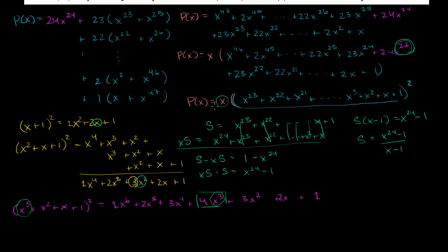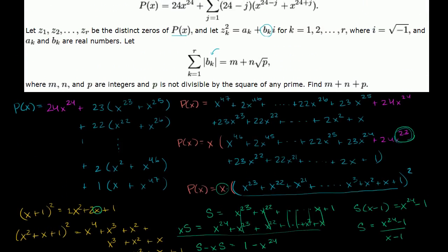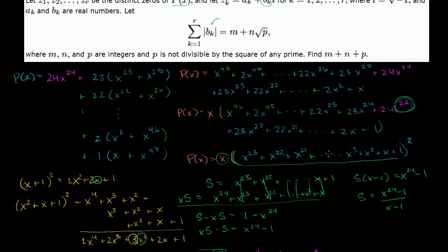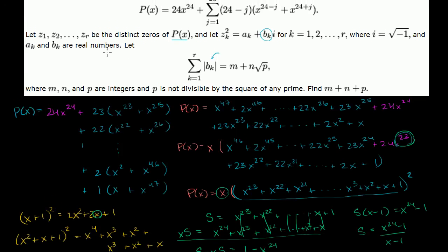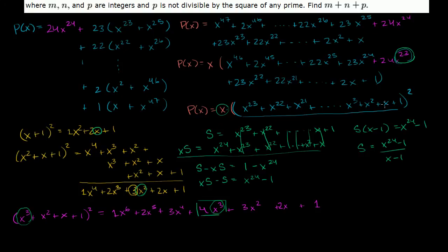Zero squared is still 0 and does not have a complex part, so it doesn't matter. Also, we don't want to double-count roots. The polynomial will have 23 distinct roots from this part. And as the problem says, z1, z2, and zr are the distinct zeros of p of x, so we only care about these 23 zeros.